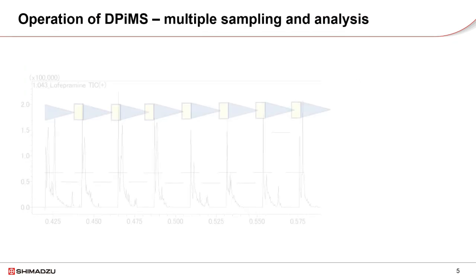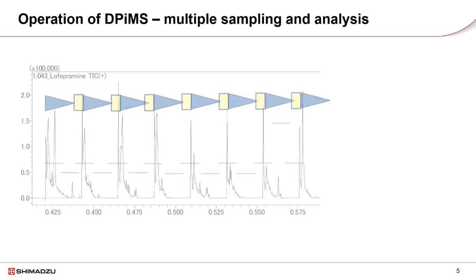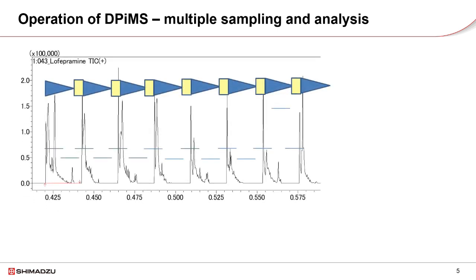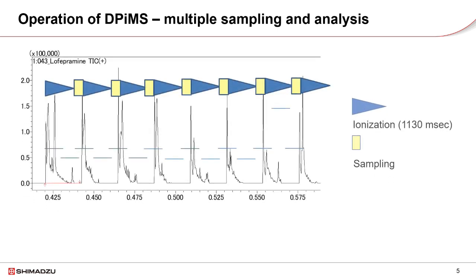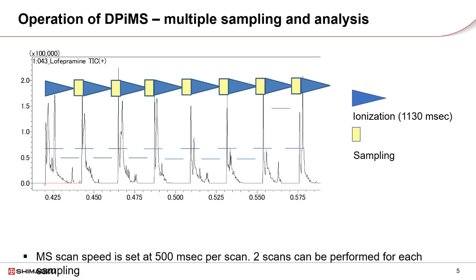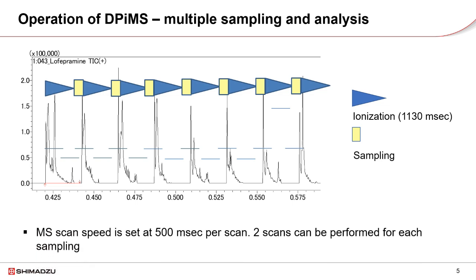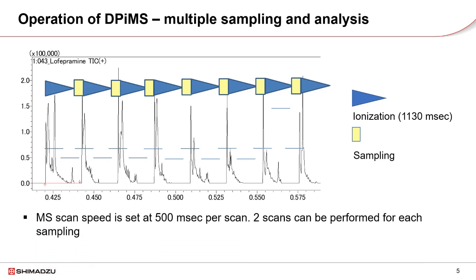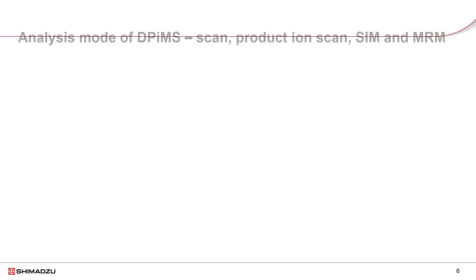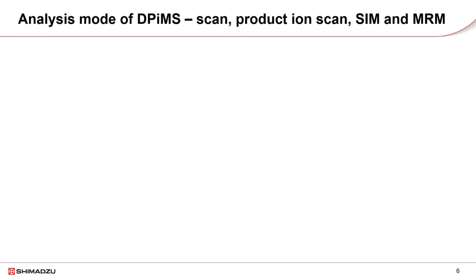The ionization time for each sampling is 1,130 milliseconds. If the MS scan speed is 500 milliseconds per scan, we can obtain two spectra for every sampling. Multiple sampling and analysis are the standard operation mode for DPI-MS.